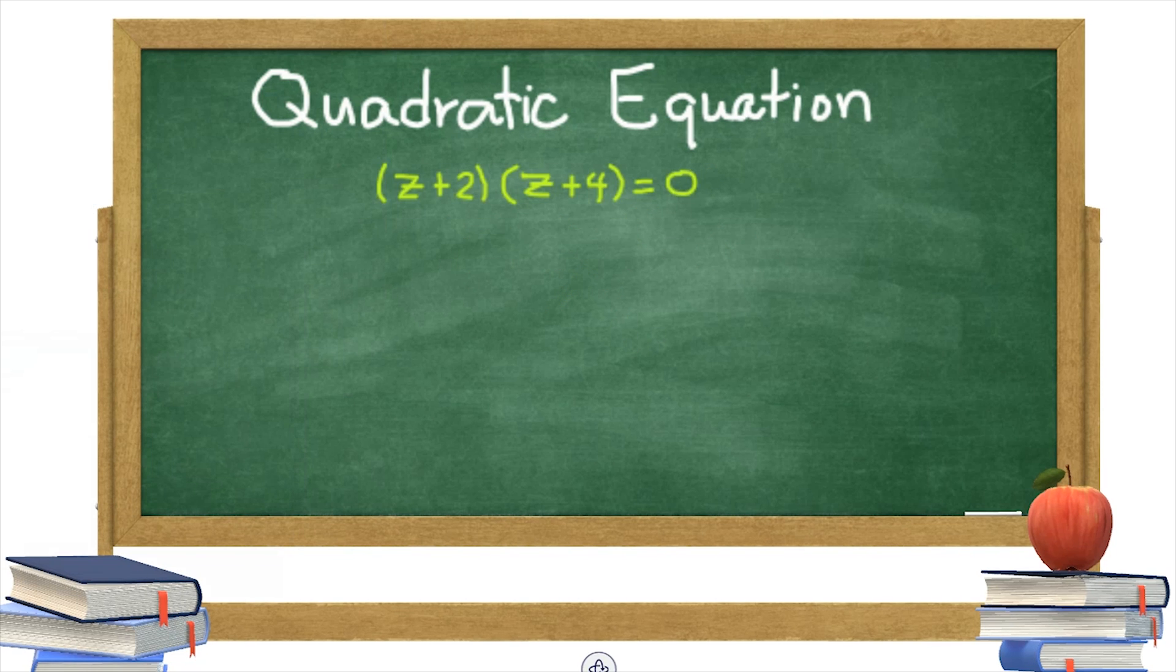How about this? Is this a quadratic equation? Let's check. This can be written in the standard form by expanding the product. Z times z is z squared. Z times 4 is 4z. 2 times z is 2z. Then, 2 times 4 is 8. Z squared plus 4z plus 2z plus 8 is equal to 0.